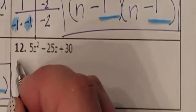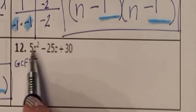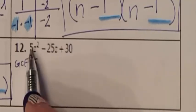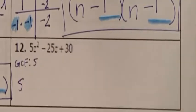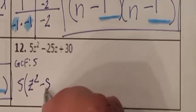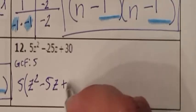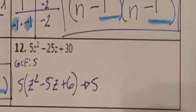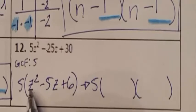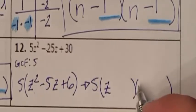Number 12: 5, negative 25, and 30. I know that I have a GCF of 5 because I can divide everybody by 5. There is no variable GCF, so 5 is all I have. After dividing everybody by 5, I now have Z squared minus 5Z plus 6, with a 5 on the outside. Because A is 1, this parenthesis can be factored into two parentheses, and the only way to get Z squared is Z times Z.